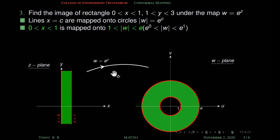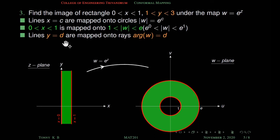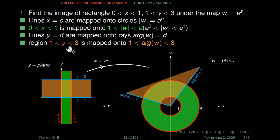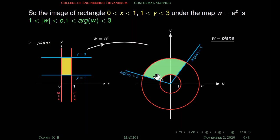The region between these two straight lines is mapped onto the region between two circles: one with radius 1 and the other with radius e. Also, lines y equal to d are mapped onto the ray argument of w equal to d, so the region 1 less than y less than 3 is mapped onto 1 less than argument of w less than 3. This is an infinite region between y equal to 1 and y equal to 3. We need the intersection of these two mapped regions. Therefore, the image of this rectangle under this map is 1 less than modulus w less than e, and 1 less than argument of w less than 3.